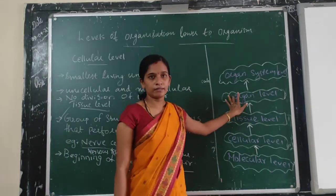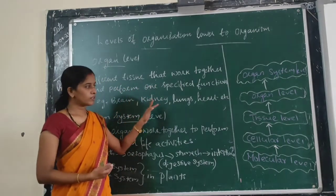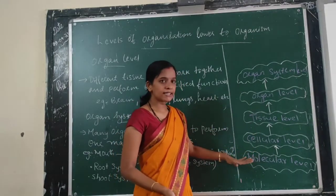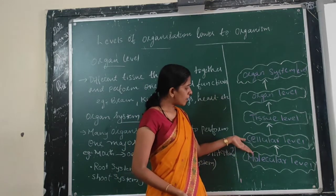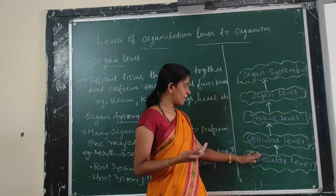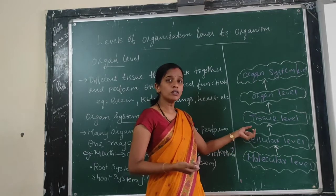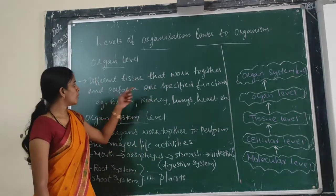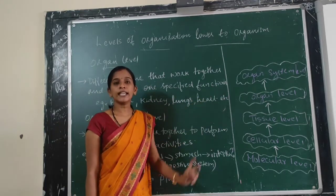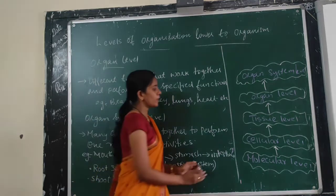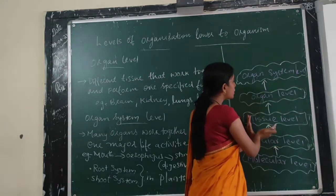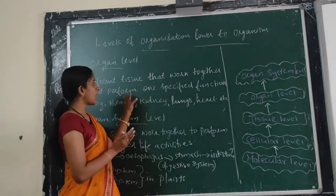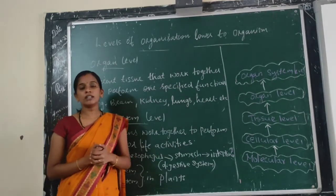Next is the organ level. Having discussed molecular level, cellular level, and tissue level, the next is organ level. Different tissues that work together to perform one specified function form an organ. A group of tissues combined together performing a specified function is called an organ.